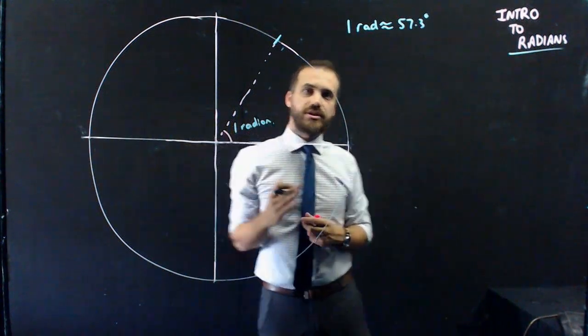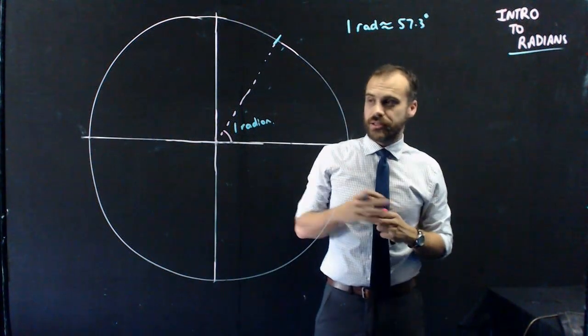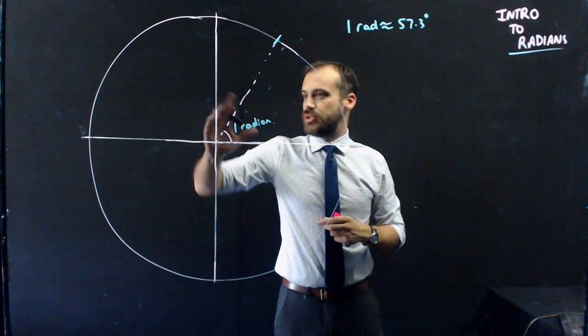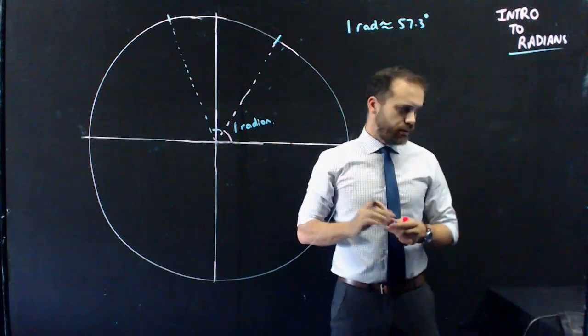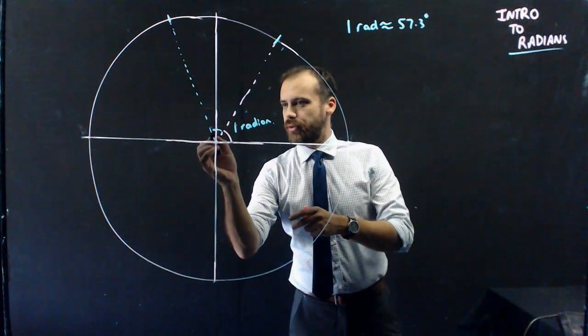If someone says they've turned that far, you'll say, oh, that's half of a radian. If somebody says that they've turned about that far, you'll be able to say that's two radians. So, there's two radians there all the way around to there.